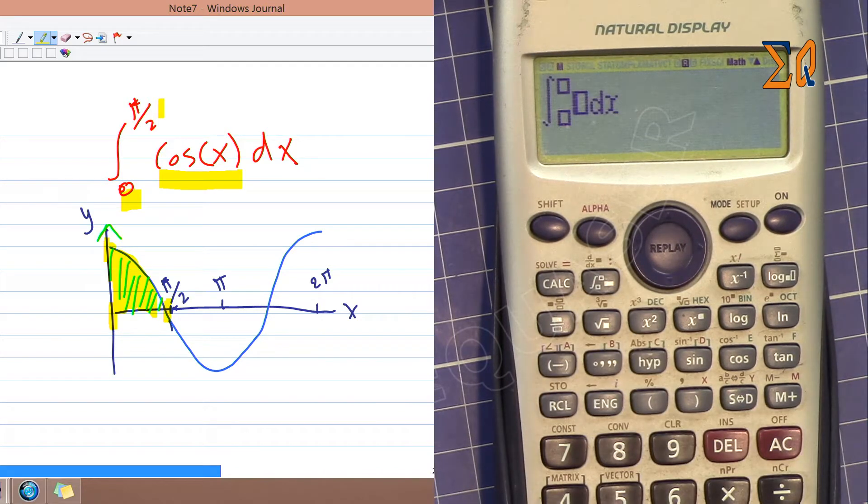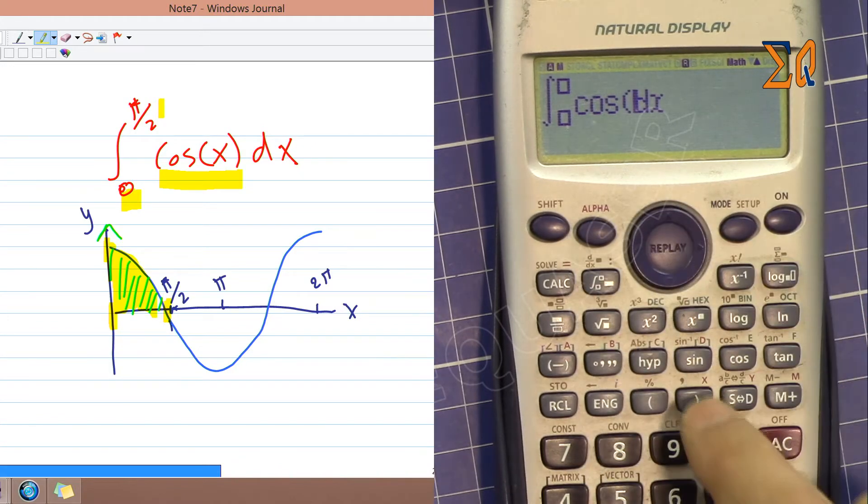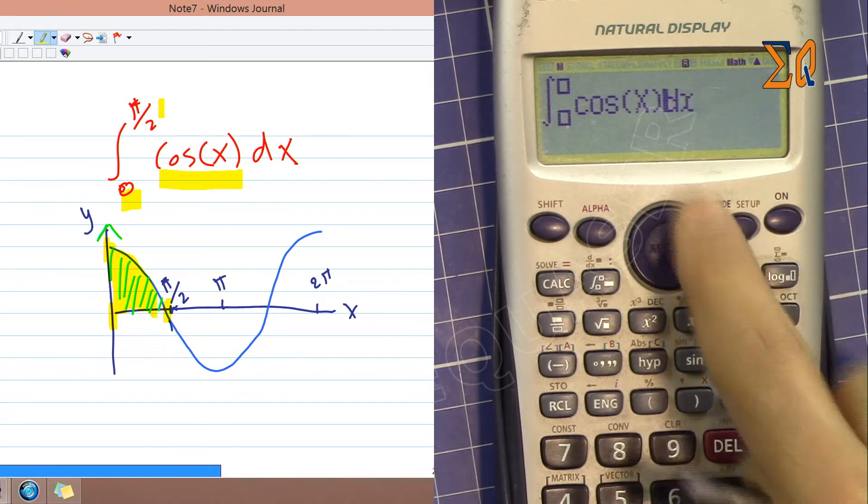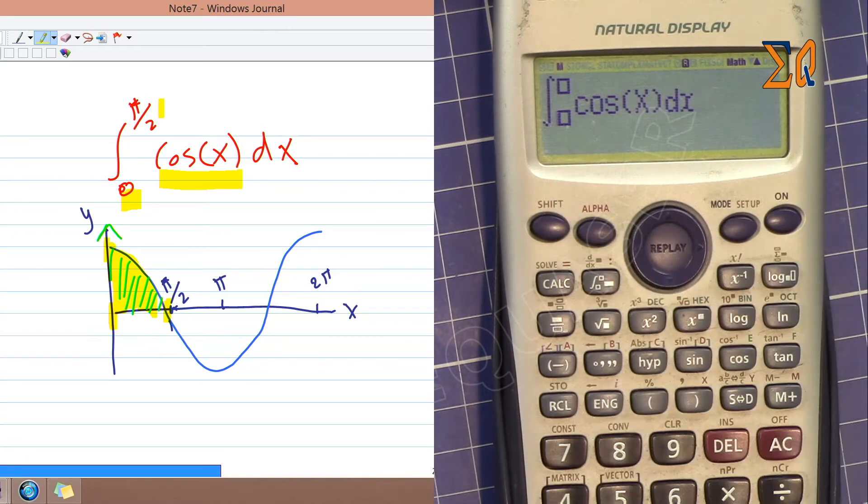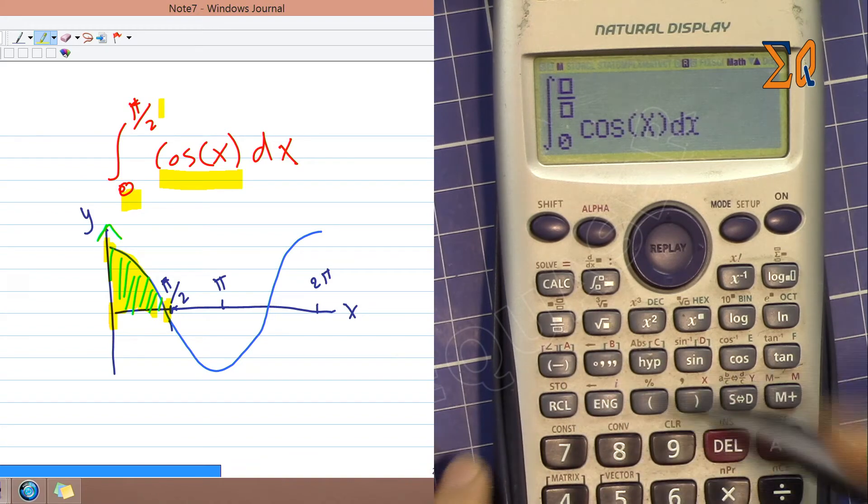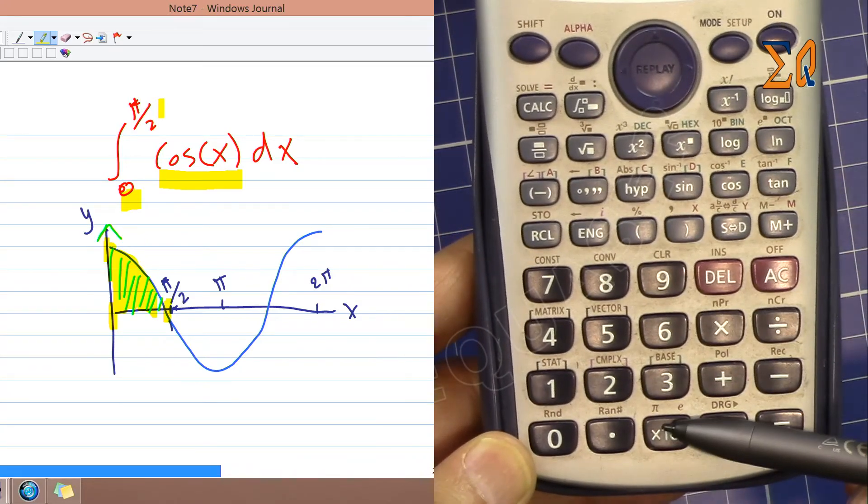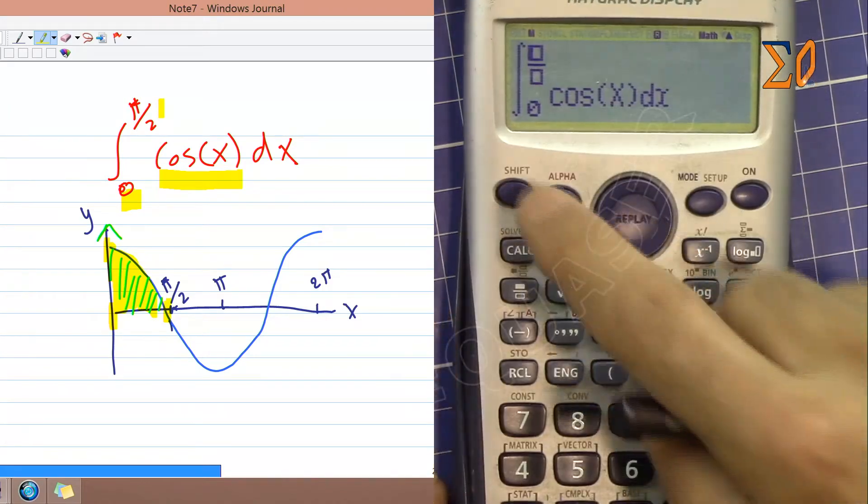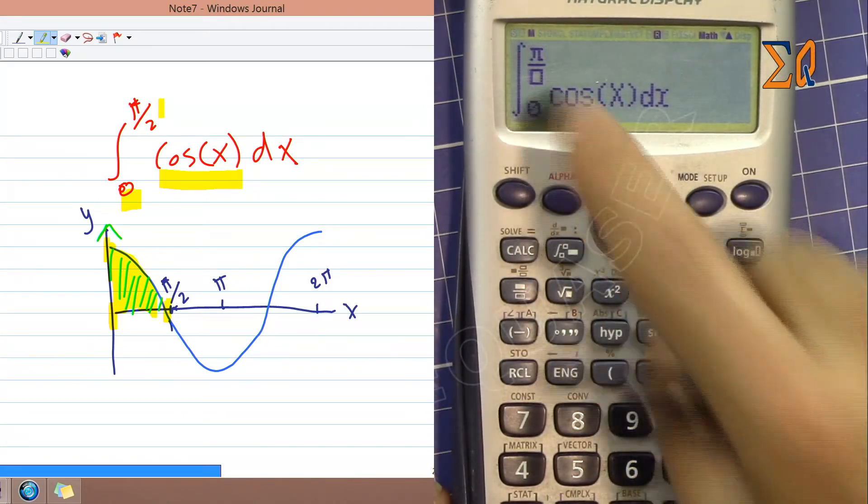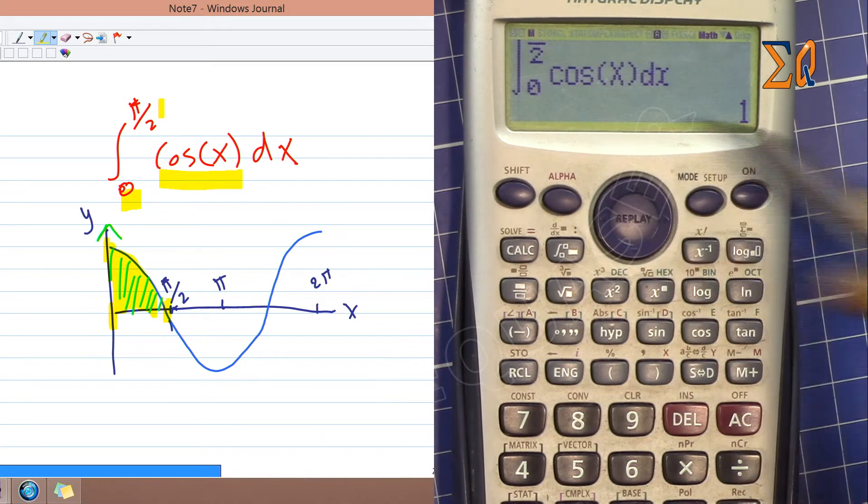Press integral, then cosine, alpha, X, close the parenthesis - that's dx. With the right arrow, go to the right for the lower bound, enter 0. Then go right again for the upper bound, π/2. For π, press shift and this button for π, then with the arrow go to the denominator and enter 2.